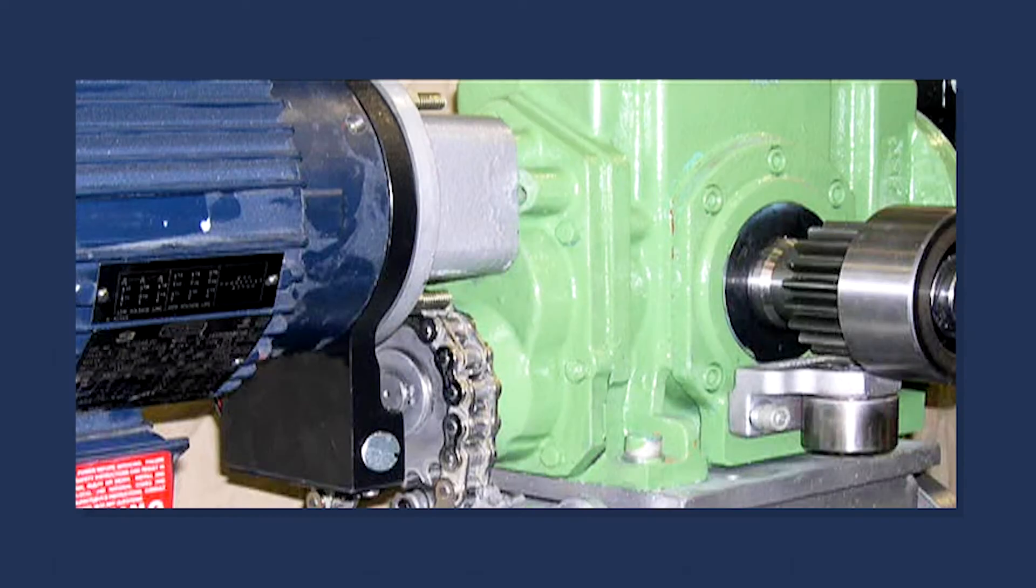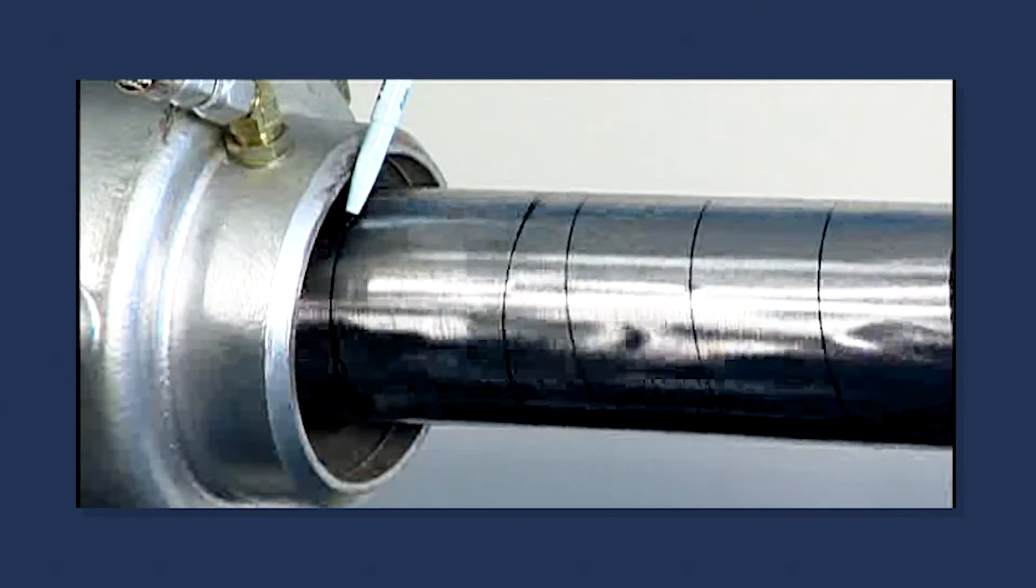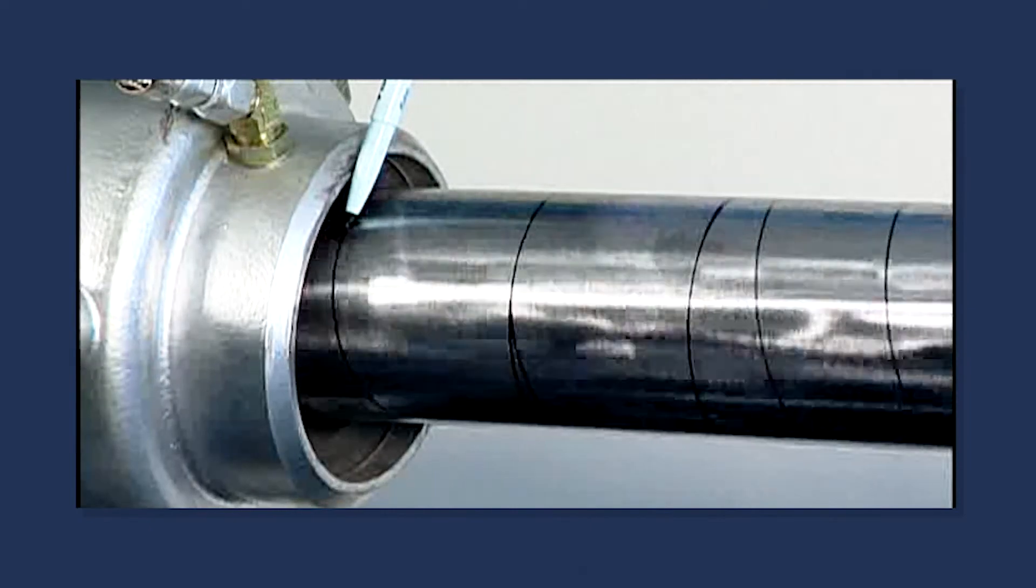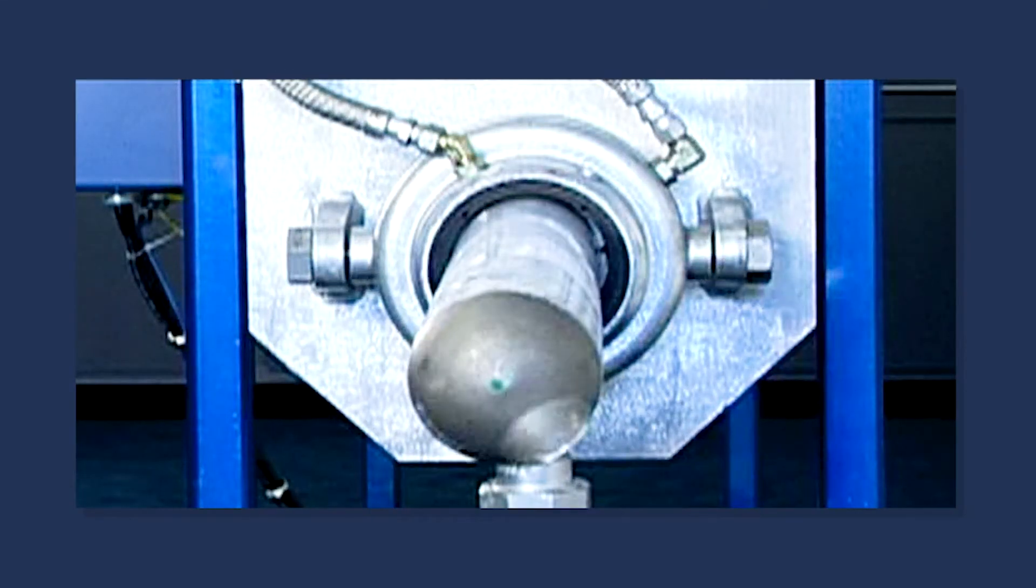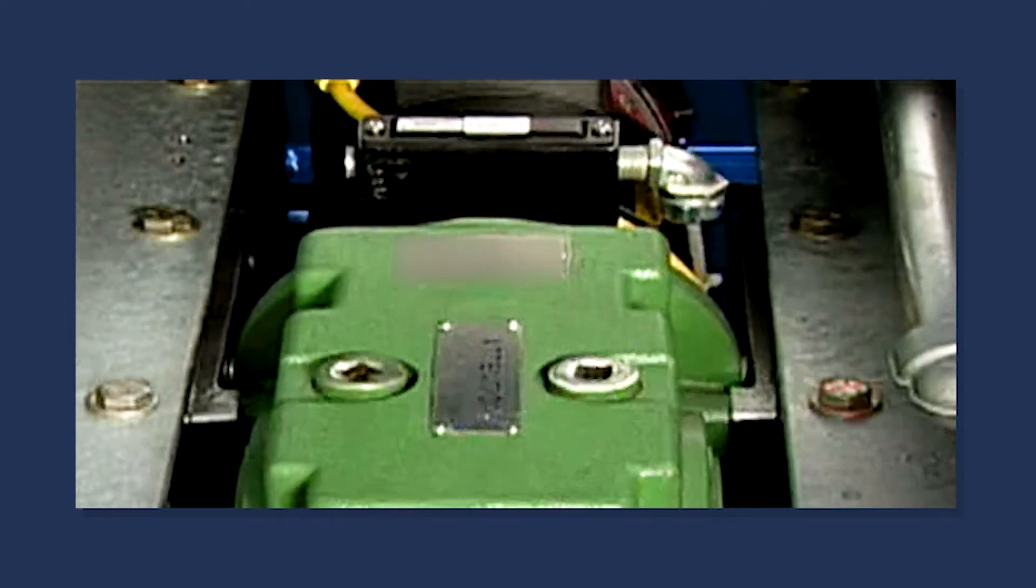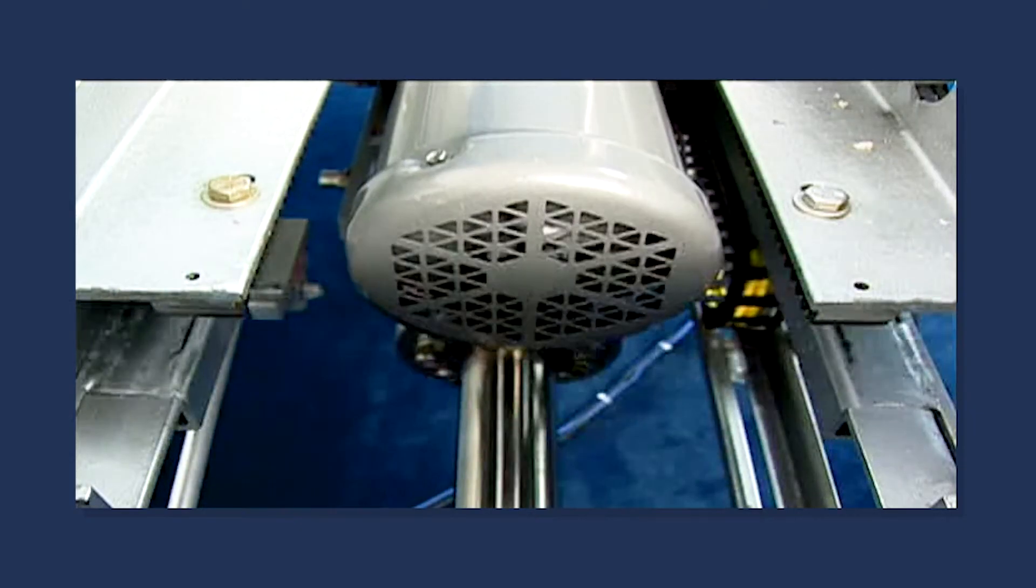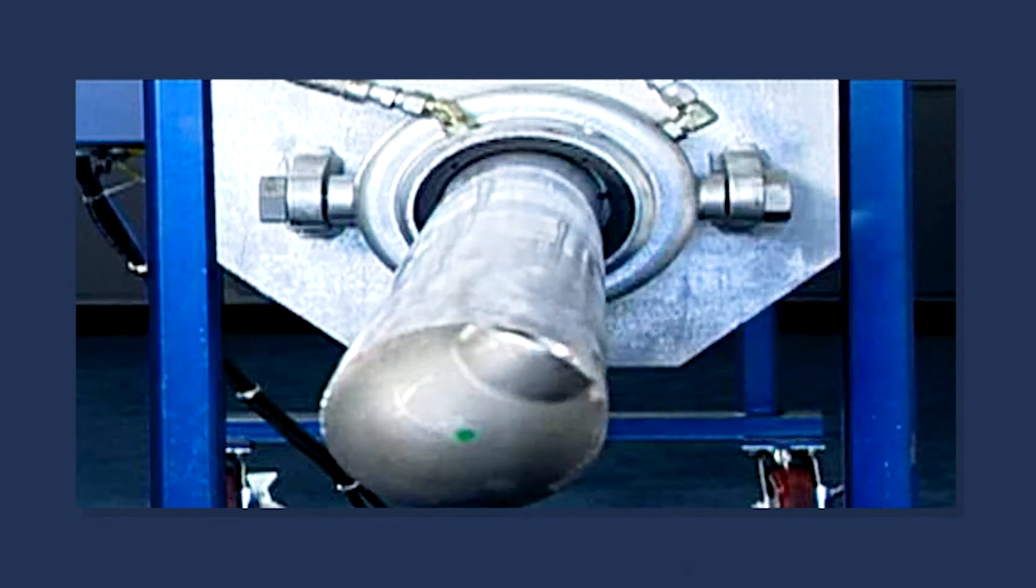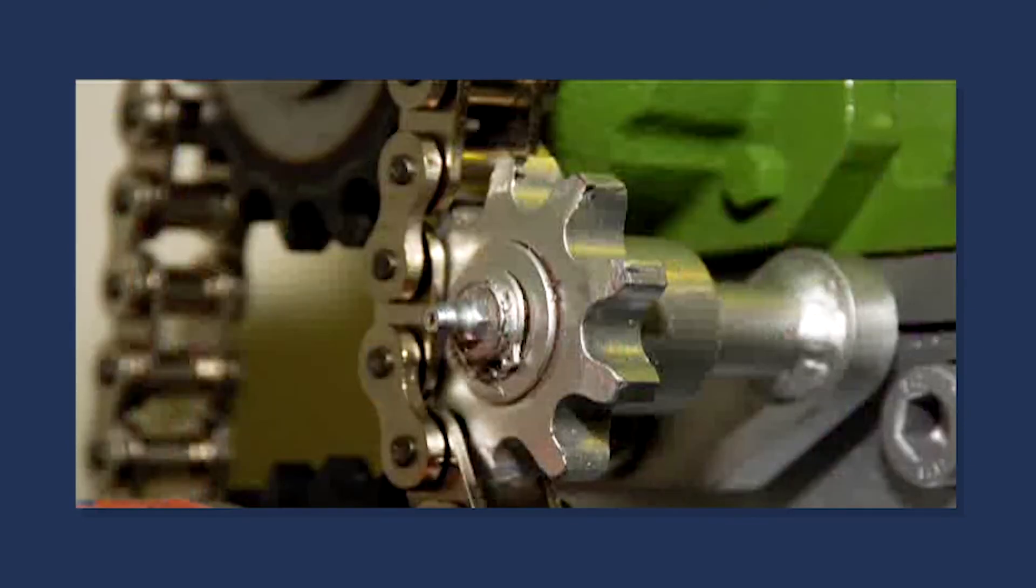Two electric motors with variable frequency drives supply the independent motions that give the smart soot blower its unique cleaning capabilities. The main drive motor powers the translation of the carriage, and the motor mounted to the rear of the gearbox provides rotation to the lance via a chain and sprocket drive.